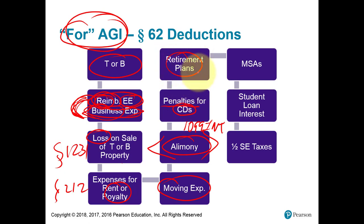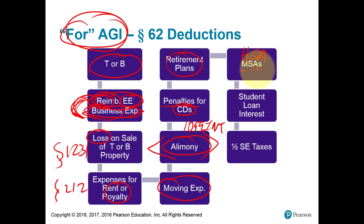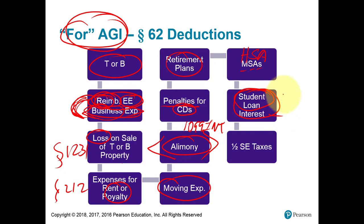Retirement plans like an IRA, a traditional IRA, or a 401(k) — if you contribute money into these plans, it can possibly reduce your taxable income, and the effect is a for-AGI deduction. A health savings account: if you contribute into this account, the employee's contribution can possibly be claimed as a for-AGI deduction. Student loan interest — typically interest would be an itemized deduction, but student loan interest can possibly be claimed up to a certain dollar limit based on income limits as a for-AGI deduction.